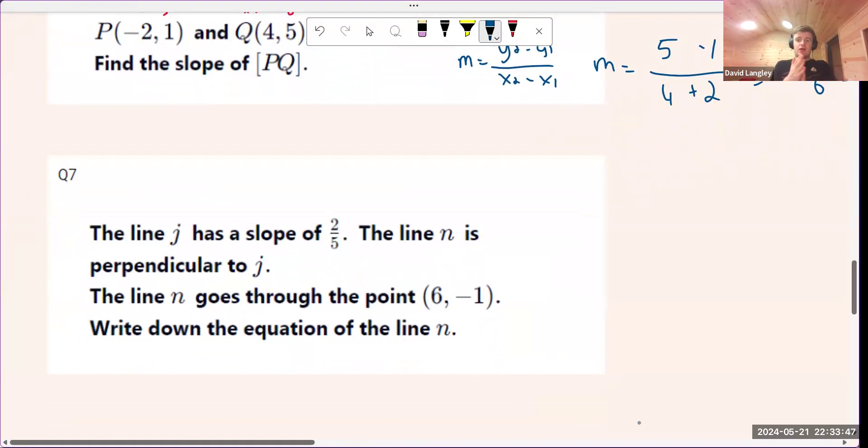What about this question? And this is the one that I kind of flagged to you in the class in talking about perpendicular slopes. The line j has a slope of 2 over 5. The line n is perpendicular to j and the line goes through the point 6 minus 1. Find the equation.